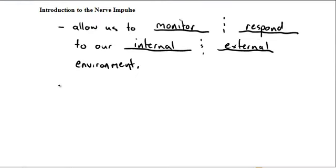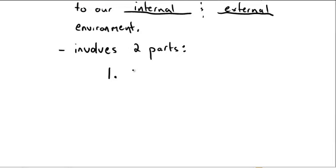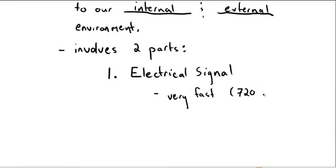But to do this, the nerve impulse involves two parts. First, order doesn't really matter because they work together, but one, we have the electrical signal, which is beneficial because it's very fast. Indeed, electrical signals can travel up to 720 kilometers per hour. This is a good thing. It allows us to respond to our environment very quickly. But the downside of an electrical signal is it's on or off. In fact, we say it's an all-or-nothing response.